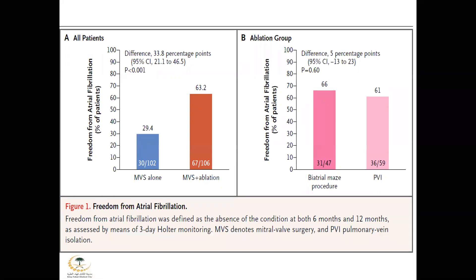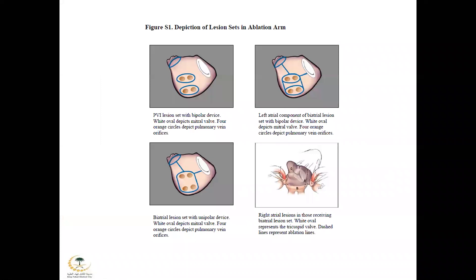In the next talk, data from the same group will show that this was not the correct conclusion. The paper also illustrates the biatrial maze technique: pulmonary venous isolation with bipolar device isolating both veins, continuing the box lesion with the mitral valve annulus line and left atrial appendage. The left atrial component can be done with a unipolar device alternatively. The right-sided lesion goes from the appendage opening to the tricuspid annulus, with additional lines to the SVC and IVC.